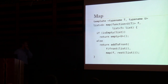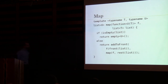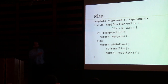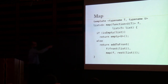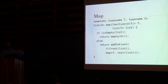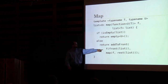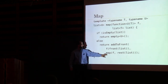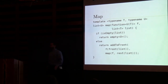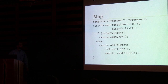Here we have a function on our list called map. Map takes in a function that goes from T to U — it'll take in a T and return a U. Remember, we're always talking about pure functions here. It takes a list of T's and returns a list of U's. Conceptually, it'll use that function and apply it to every single element of the list. We check if it's empty, we return the empty list of type U. Otherwise, we call f on the front of the list and we call map recursively on the rest of the list. This is very typical in functional programming.